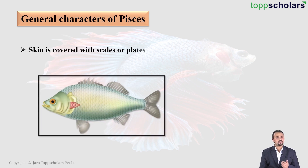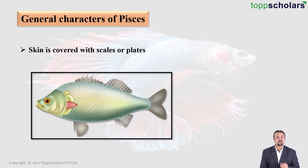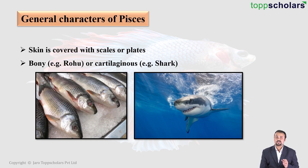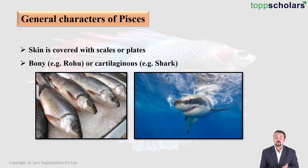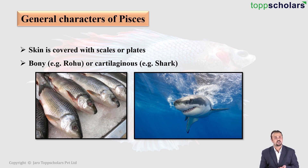Their skin is covered with scales or plates, and these scales are very large and very tough. For example, there are bony fish like Rohu, whose scientific name is Labeo rohita, and there are also certain cartilaginous fish like sharks.